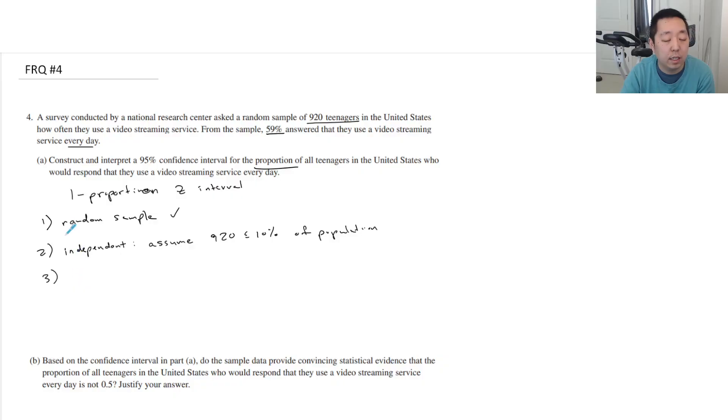Three, that it, it's normal condition, because we're going to use a Z interval, so we want a normality condition. And that is that N times P is greater than or equal to 10, and N times 1 minus P is greater than or equal to 10.